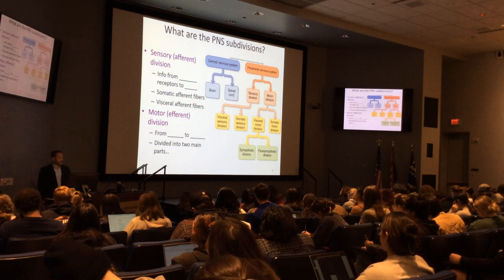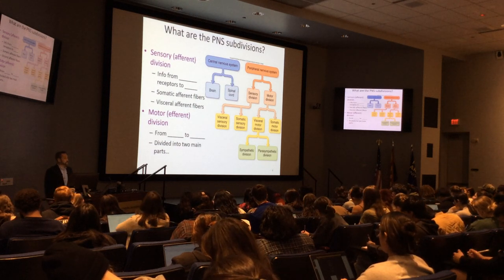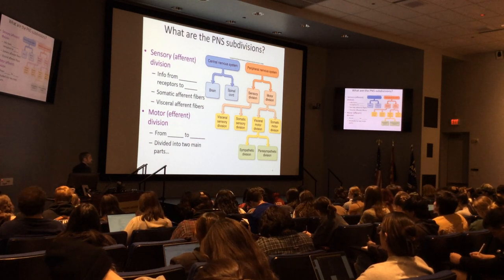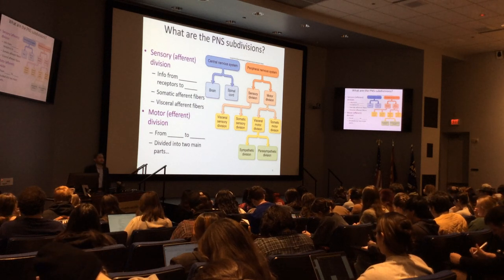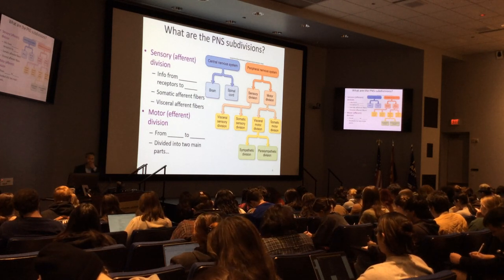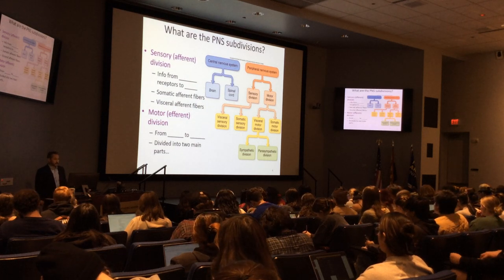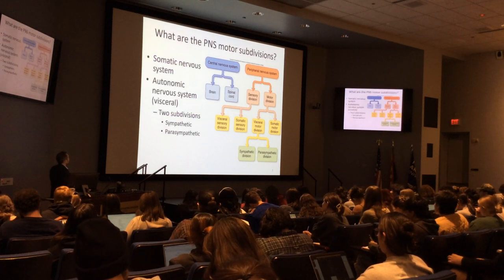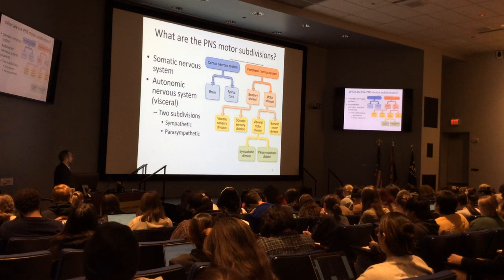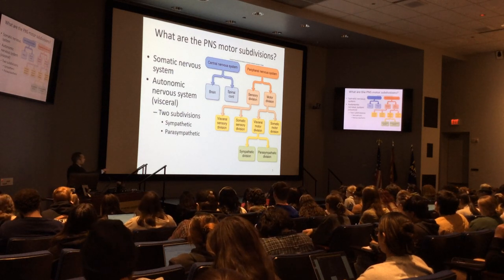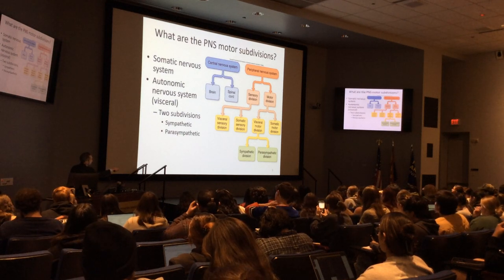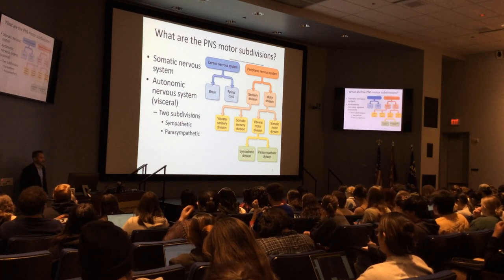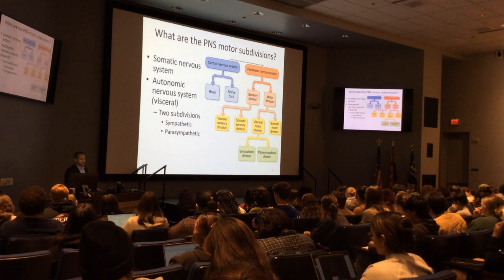The motor pathway — efferent — takes information from the central nervous system to the effector. The effector organs could be muscles, glands, tissue. This is divided into two main parts: the somatic nervous system and the autonomic nervous system. Following this decision tree: peripheral, sensory, motor, somatic, visceral — now we're going into autonomic, dividing into somatic.